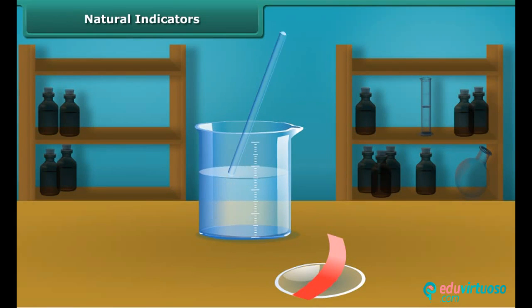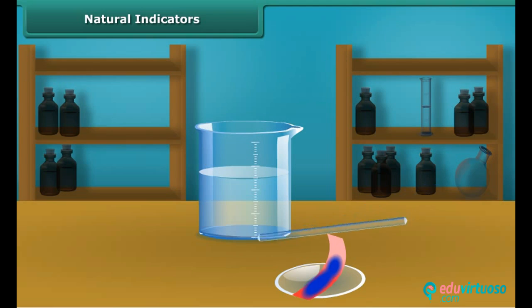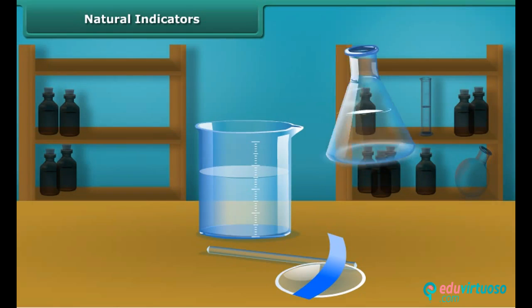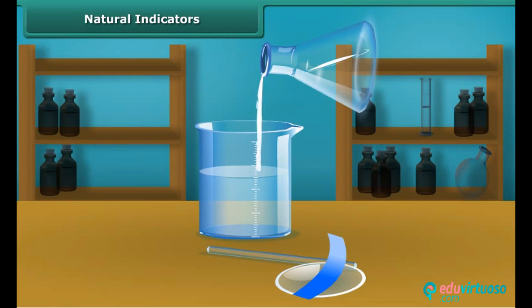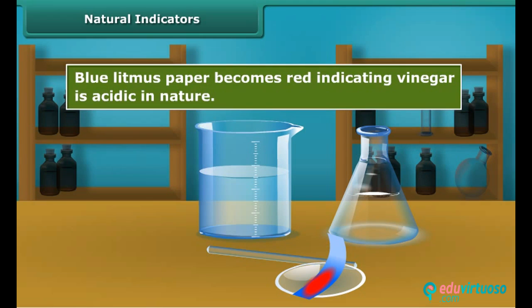You can test the nature of a solution using litmus paper. Dip a clean stirring rod into the baking powder solution and touch the wet rod to red litmus paper — the red litmus paper turns blue, indicating that baking powder is alkaline in nature. Again, dip a clean stirrer into the vinegar solution and put one drop on blue litmus paper — the blue litmus paper becomes red, indicating vinegar is acidic in nature.